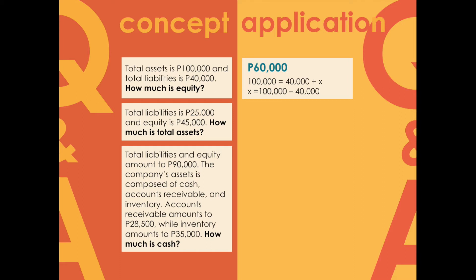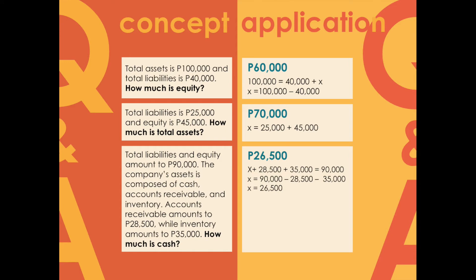Problem three: total liabilities and equity amount to 90,000 pesos. The company's assets are composed of cash, accounts receivable, and inventory. Accounts receivable amounts to 28,500 pesos while inventory amounts to 35,000 pesos — how much is cash? Using the equation: x plus 28,500 plus 35,000 equals 90,000. Solving for x, we get a cash balance of 26,500 pesos.